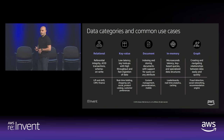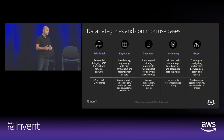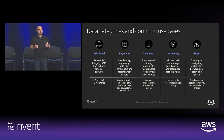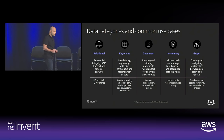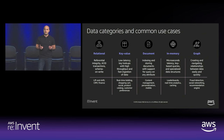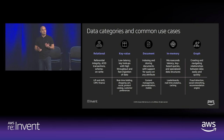Gone are the days where you have one monolith database serving all your data needs. With the diversity of usage patterns and data access patterns, you really need a database that's optimized and purpose-built for a particular use case. In the case of ElastiCache, it fits in the in-memory space — partly because the data is in memory, it's incredibly fast, orders of magnitude faster than retrieving data from disk. In addition to the speed, you have specialized data structures that can really augment your applications and architectures.